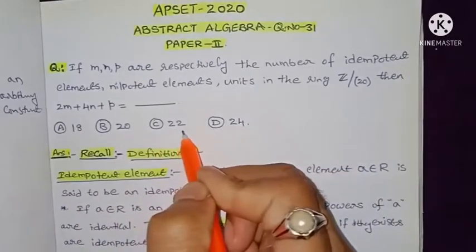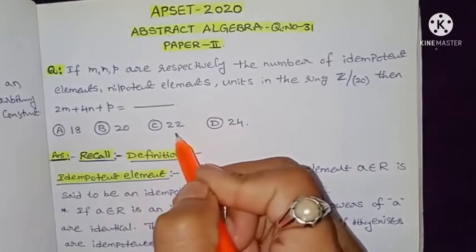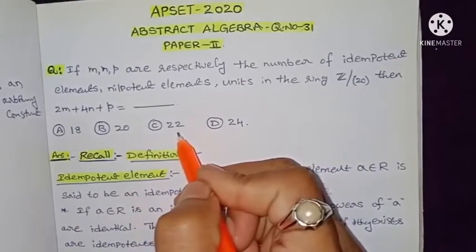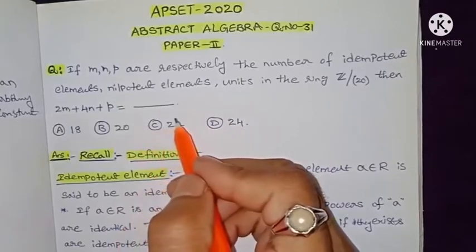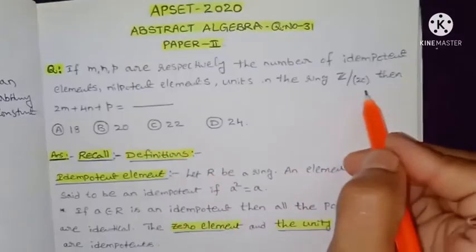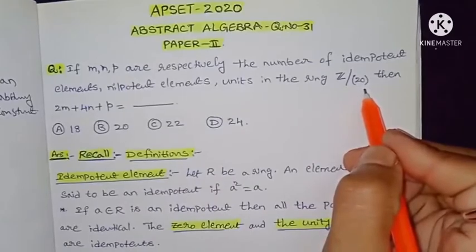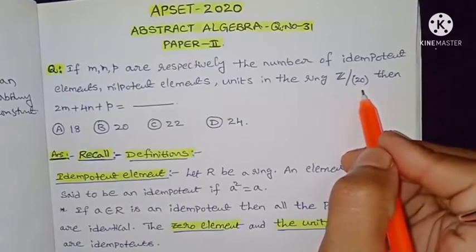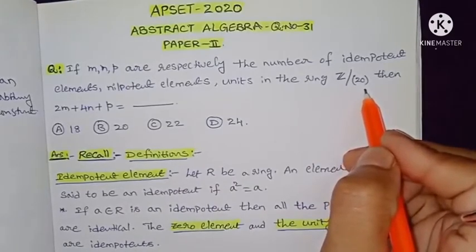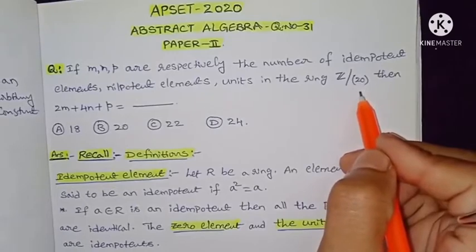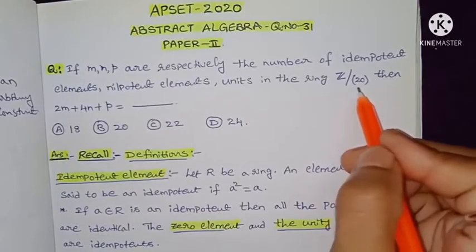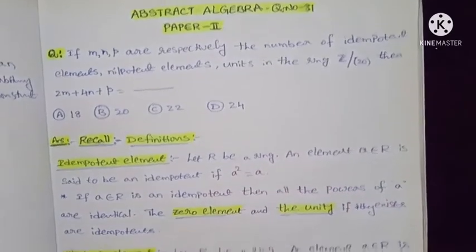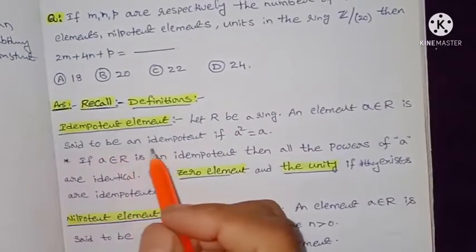We have to choose one correct option. The question asks us to find the number of idempotent elements, nilpotent elements, and units in the ring Z modulo 20. First we need to recall the basic definitions of idempotent element, nilpotent element, and unit elements of a ring.